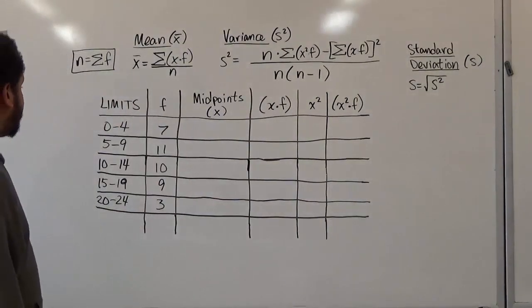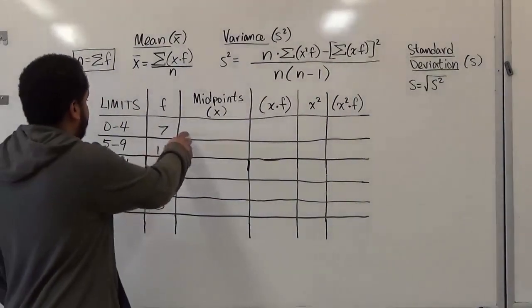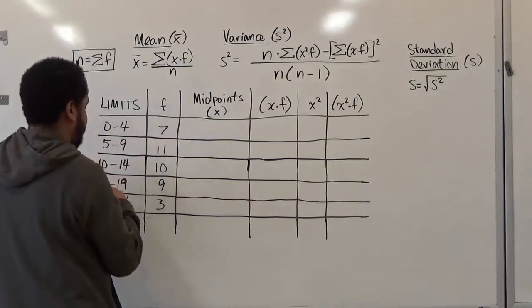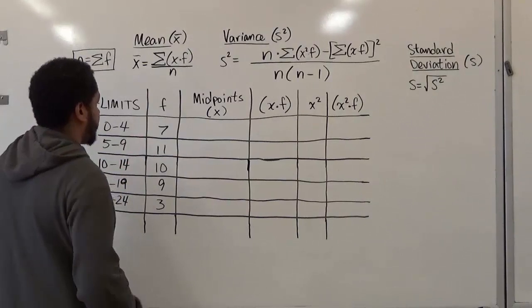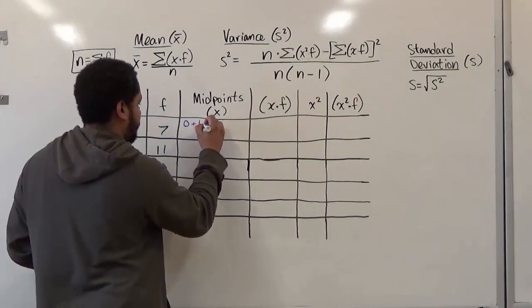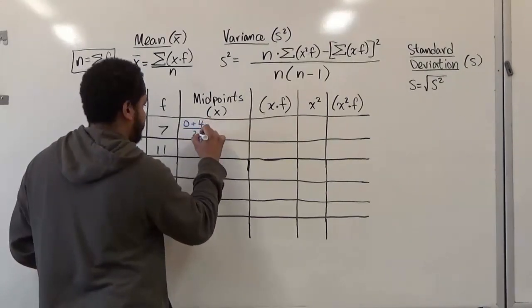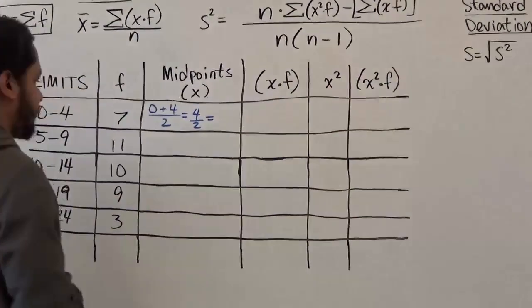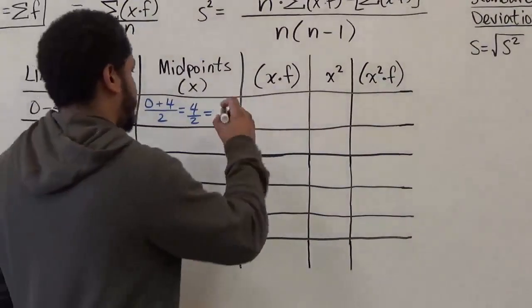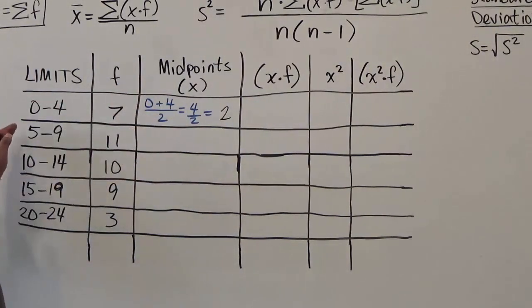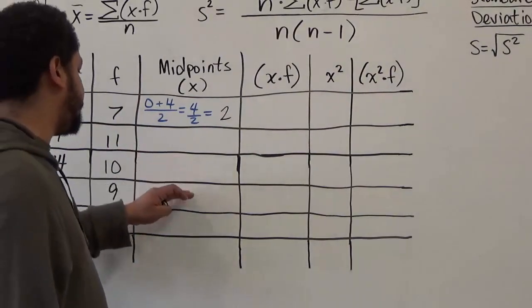For the first midpoint, we're going to calculate the midrange of the two limits — the upper and the lower. To do that, we take the left limit, zero, and add the right limit, four, then divide by two. So we get four divided by two, which gives us two. We'll correspondingly go down this column row by row for every class limit until we calculate each and every midpoint.